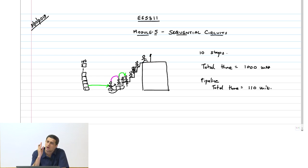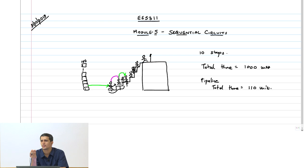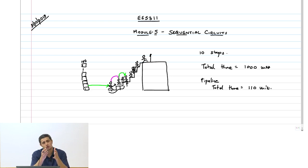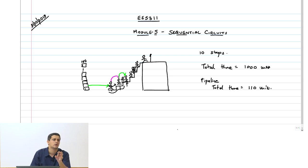This pedestal is nothing but a sequential element, because it is able to hold the data until the next one arrives. The assumption is that the pedestal can hold exactly one brick — if the second brick comes before the first is taken, you drop it and fail. Introducing a sequential element like this increases area because you need real estate for that pedestal, and there is also a time delay involved in placing the brick on the pedestal carefully. That time overhead is basically what is known as setup and hold time.